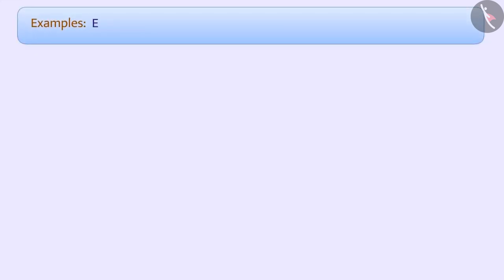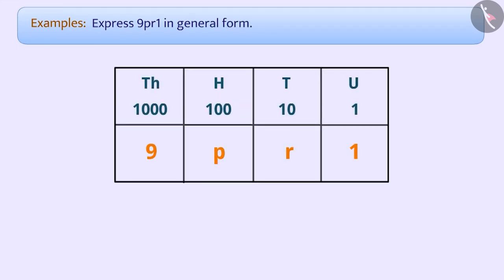Example 2. Express 9pr1 in general form. Here, we see that 9 is in the place of thousand, p is in the place of hundred, r is in the place of tens, and 1 in the place of units.